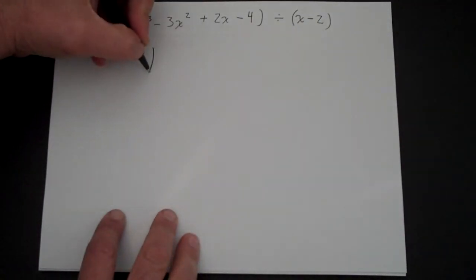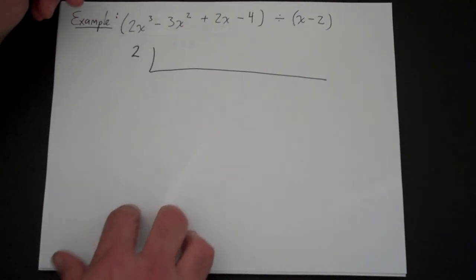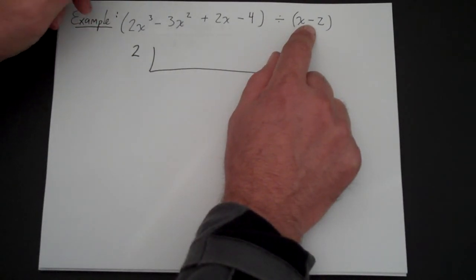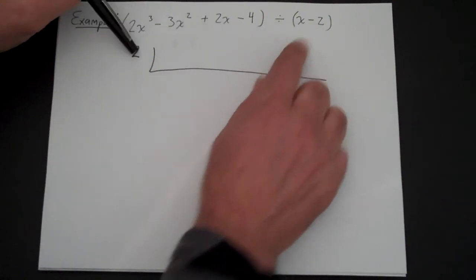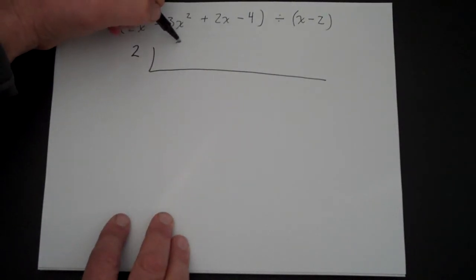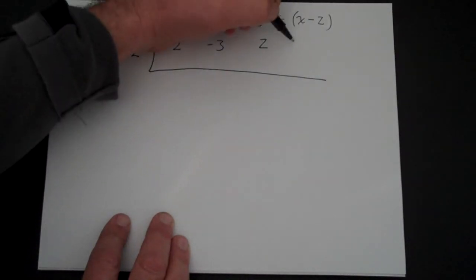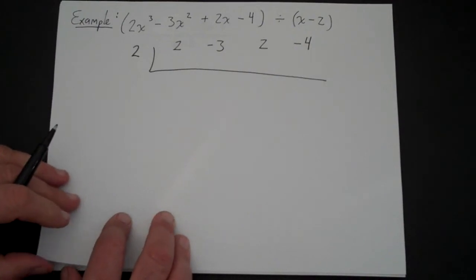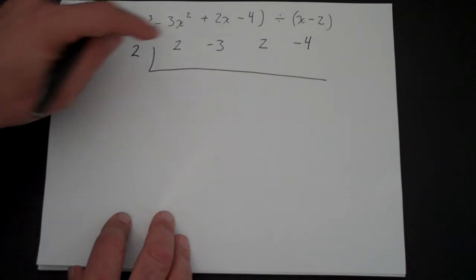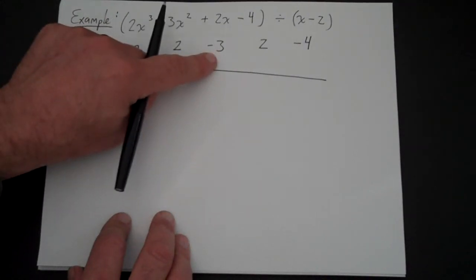Let's do another example. I'm going to put the division bar upside down and put a 2 here. Now let's think about whether it's positive or negative — this is a negative 2, so when we do synthetic division we switch the sign, so it becomes a positive 2. Now you're going to write down all these numbers, and if there's one missing you put a 0. So that's 2, then minus 3, then 2, then minus 4. Take the 2 and put it there. Multiply, put your answer there, and then add.